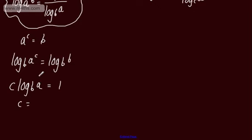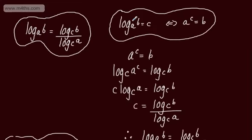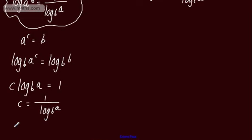Dividing both sides by log to the base B of A, C is equal to 1 over log to the base B of A. We know that C is equal to log to the base A of B, so we can write log to the base A of B is equal to 1 over log to the base B of A.